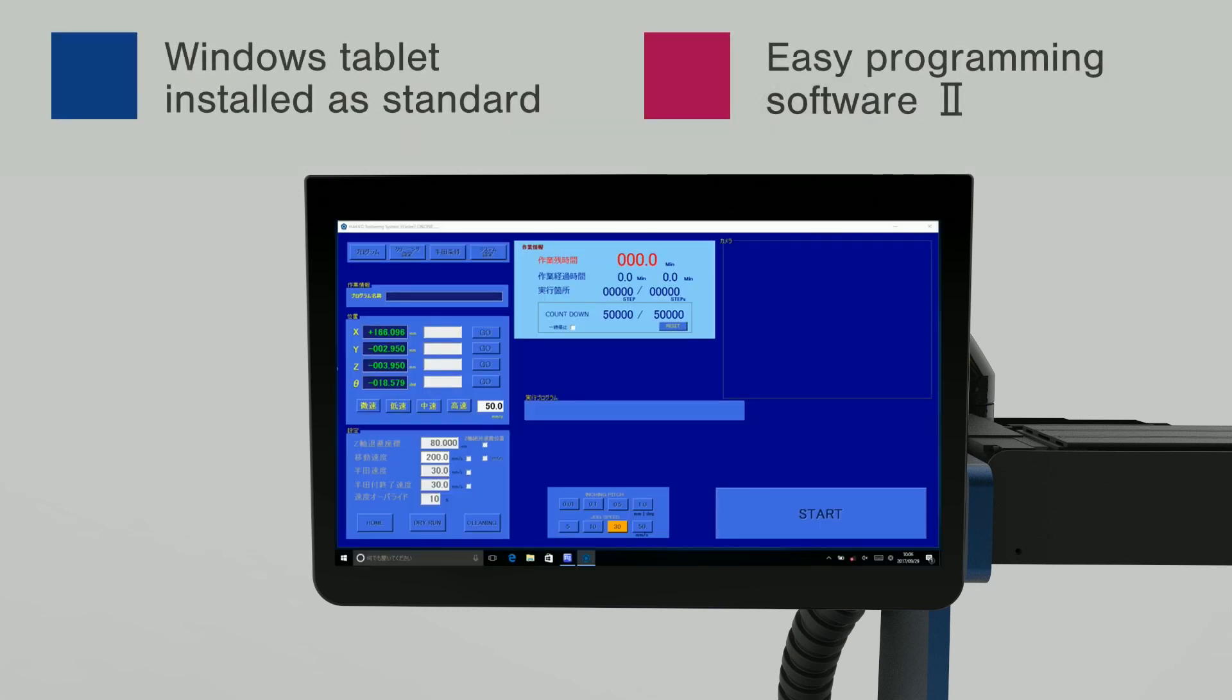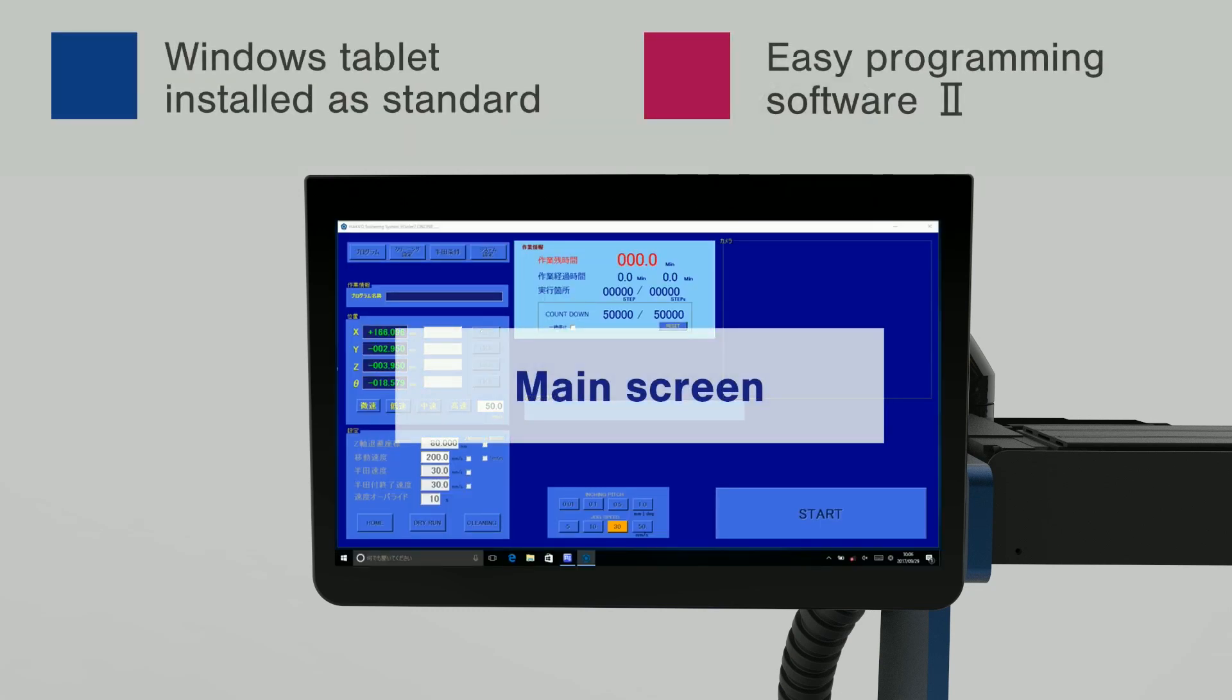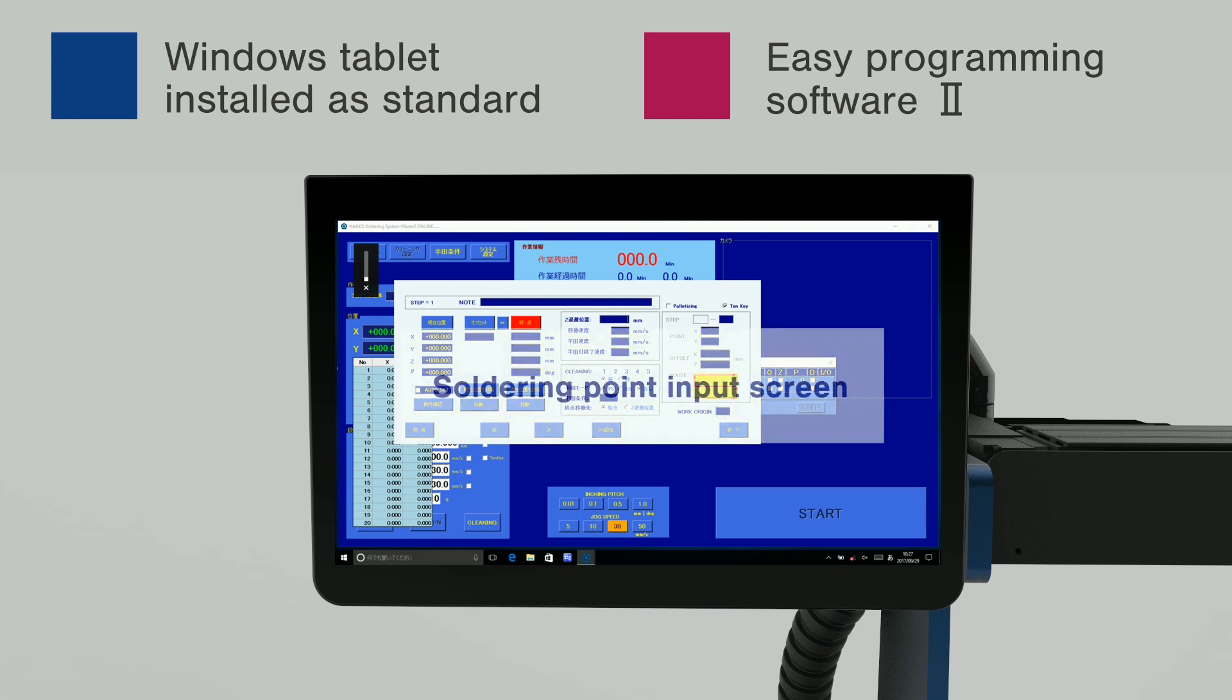A Windows tablet PC is installed as a standard option to enable automation of soldering for anyone without any need for special knowledge of a programming language and ladder program specialized for robots, with the original Easy Programming Software 2 pre-installed.